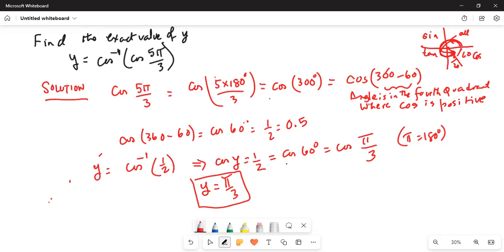So, my y is equal to cosine inverse half. That means cosine of y is equal to half, which is cosine of 60 degree. Therefore, y is pi over 3 or 60 degree. That is your final answer.